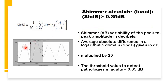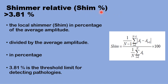The shimmer absolute is the average shimmer across a certain time period — all differences between consecutive cycles are added up, divided by the number of cycles minus one, then multiplied by 20; it is presented in decibels. The threshold to detect pathology is anything more than 0.35 dB. The shimmer relative, or shimmer percentage, is obtained by dividing the local shimmer by the average amplitude of the glottal cycles in the time period, then multiplied by 100. If this percentage exceeds 3.8%, it is an indication of a voice pathology.